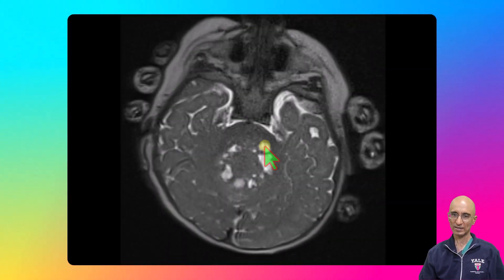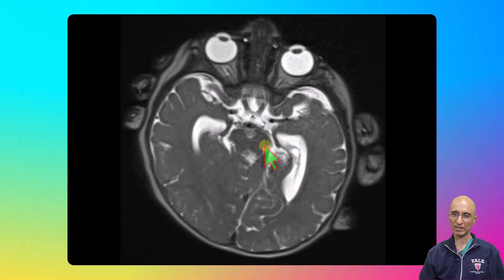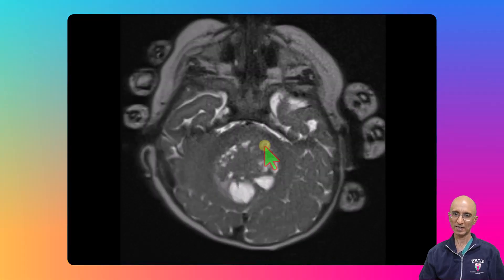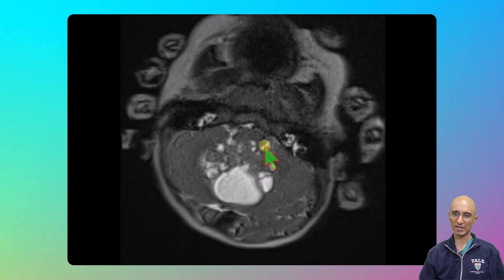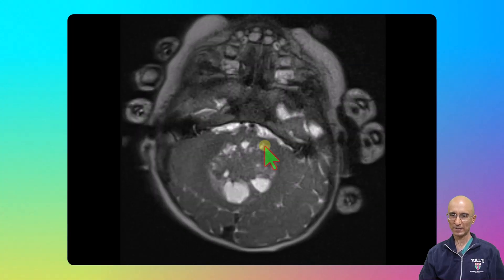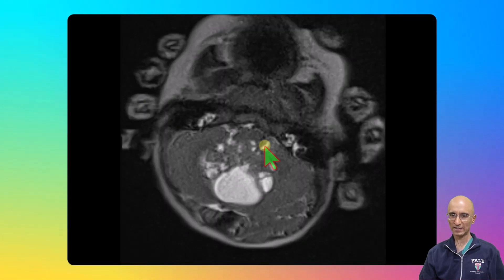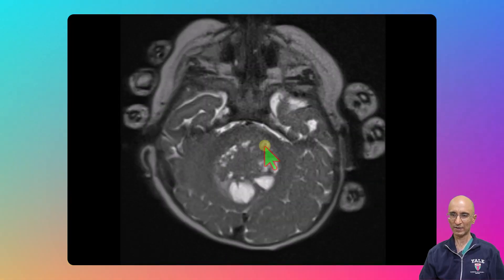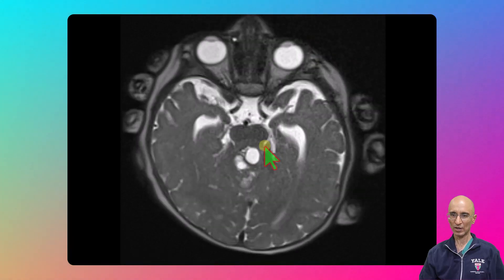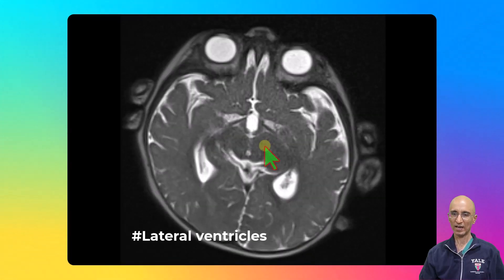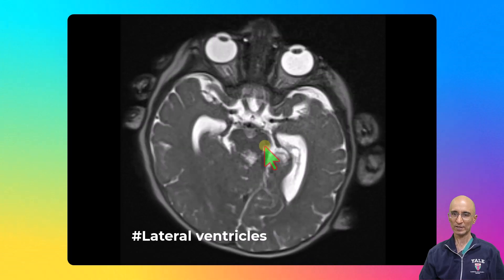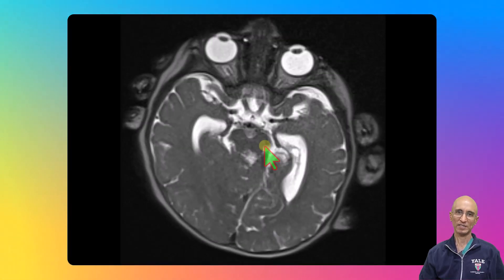As you can see on the axial T2 images, there is a posterior cranial fossa mass which has multiple cystic foci. The epicenter of the mass is likely arising from the fourth ventricle. You can see dilatation of the third ventricle and fourth ventricle. The patient subsequently underwent a complete MRI brain examination under sedation.